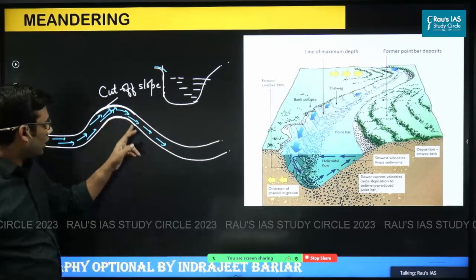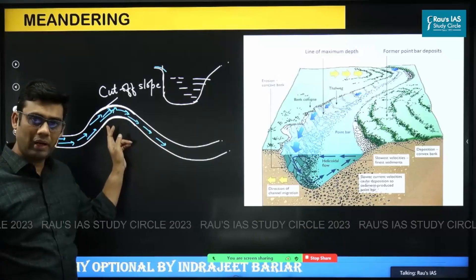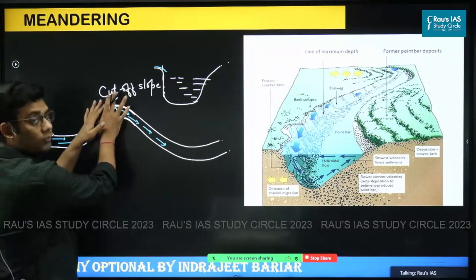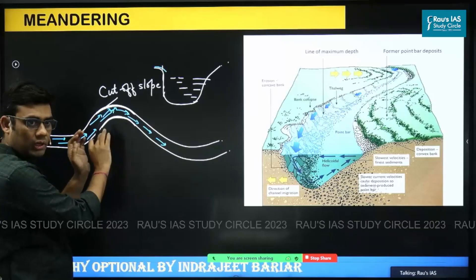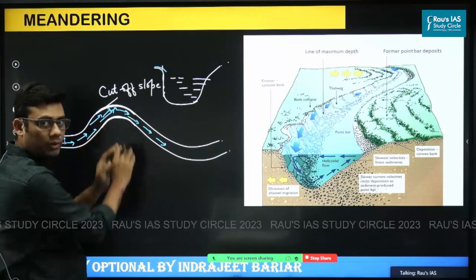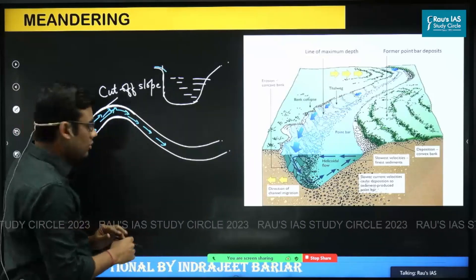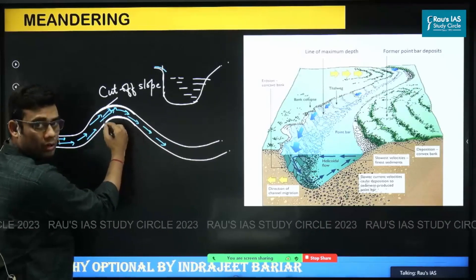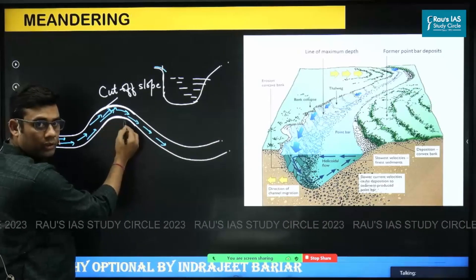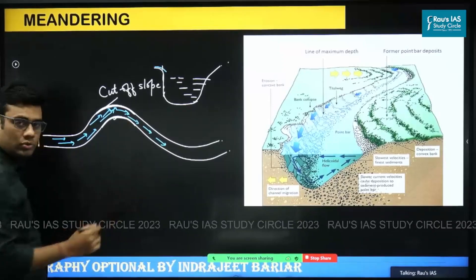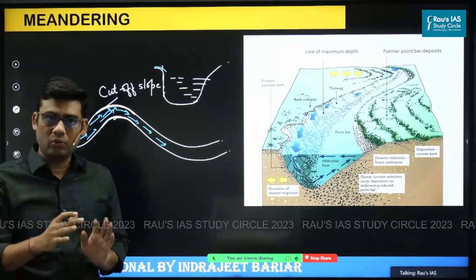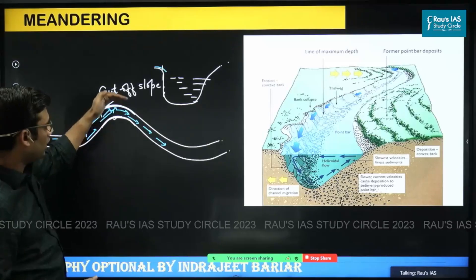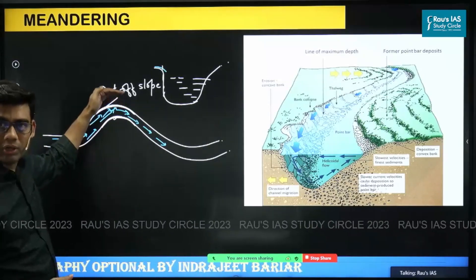Along with that, on the convex bank, what is going to happen is water is actually moving away from it. Water is not directly hitting it, so water is moving away from it. The flow of the water is going to be minimal in this part. And so over the period of time, the meander starts shifting in this direction because of the cutting.